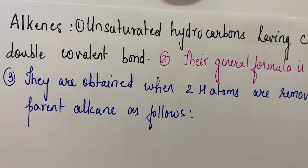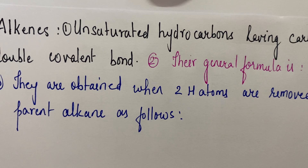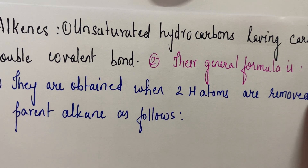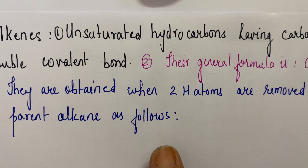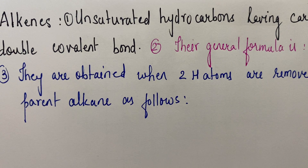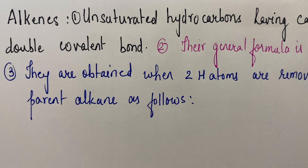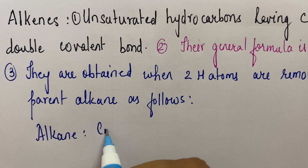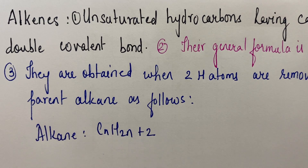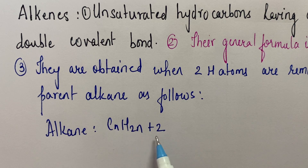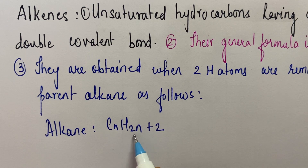Alkenes are unsaturated hydrocarbons formed by a carbon-carbon double bond. The general formula is CnH2n. They are obtained when two hydrogen atoms are removed from the parent alkane. The parent alkane general formula is CnH2n+2; if you minus 2 hydrogen, you get CnH2n, which is the general formula for alkenes.